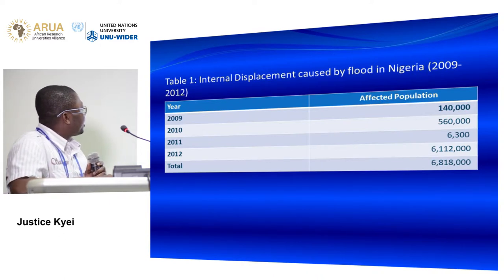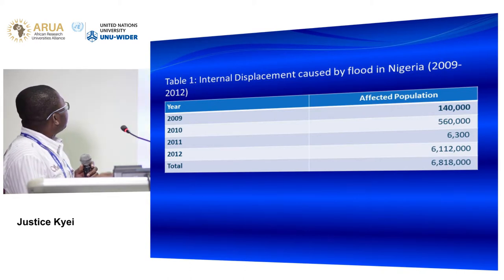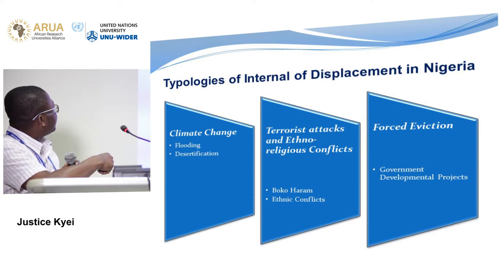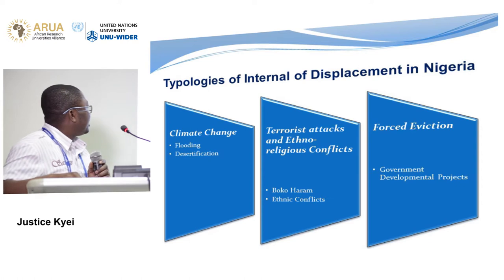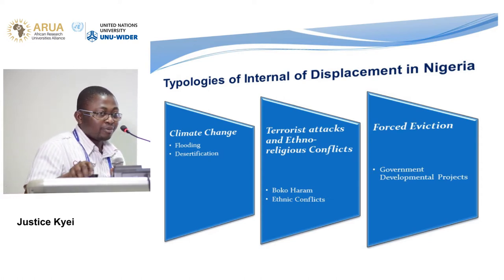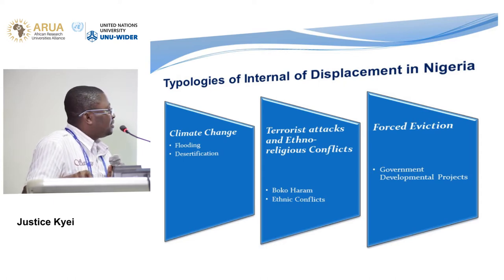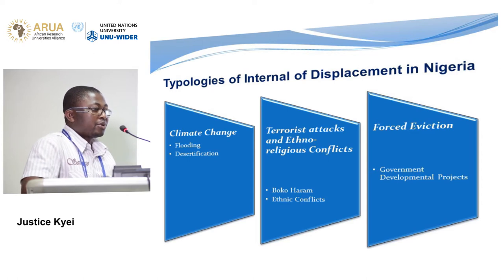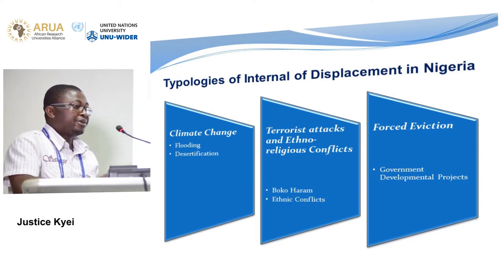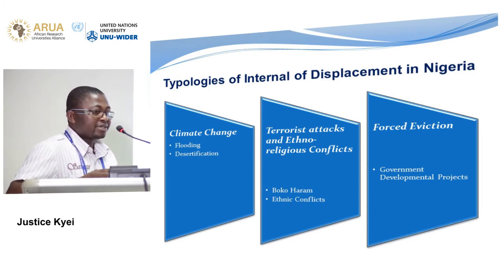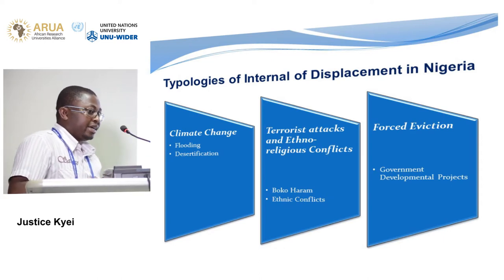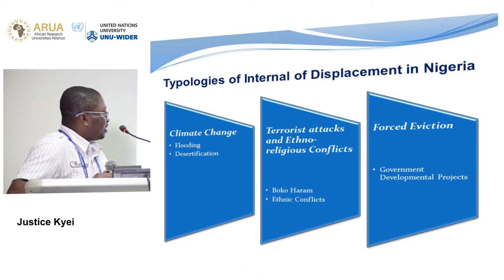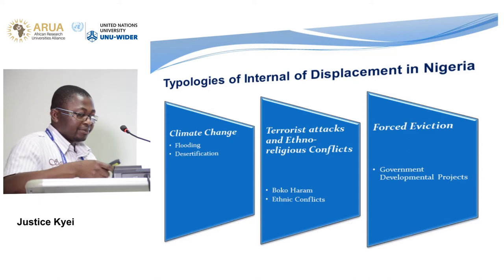The next typology is terrorist attacks and ethno-religious conflicts, focusing on the Boko Haram issue, which has been harassing populations particularly in northern Nigeria. Most of those displaced remain in Nigeria, but some cross the border to Cameroon and neighboring Benin. However, because they fail to qualify as refugees, they are forced to return to Nigeria — which is not supposed to be the case. But this is the problem of legality that comes with internal displacement. The last typology is forced eviction.